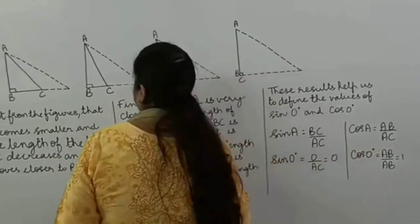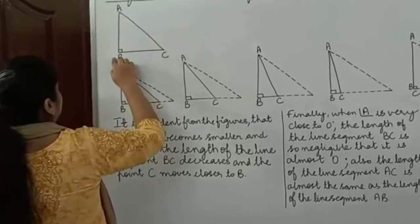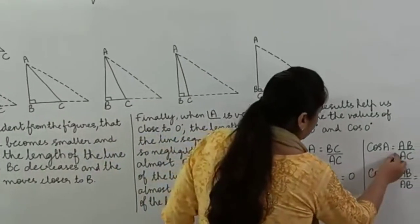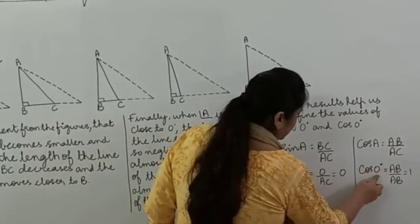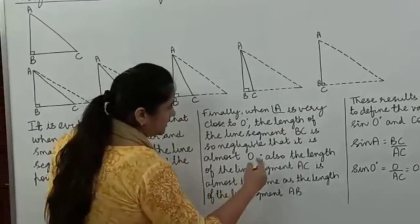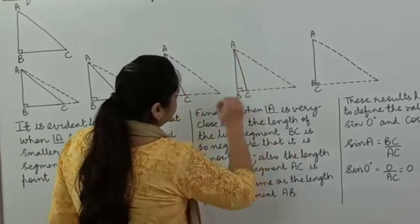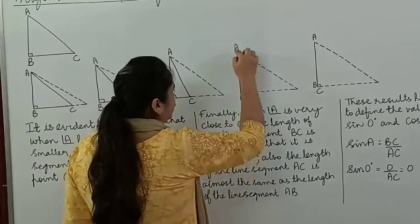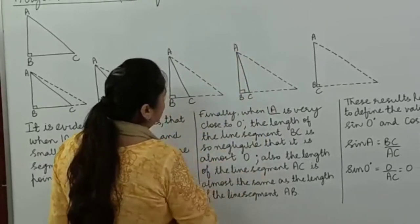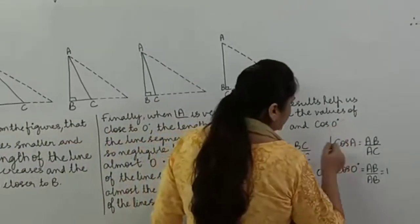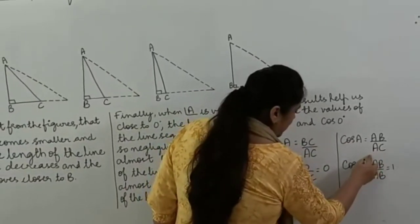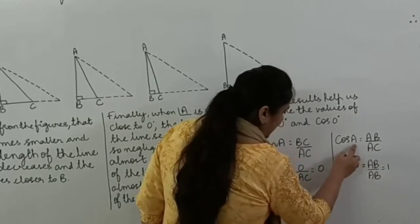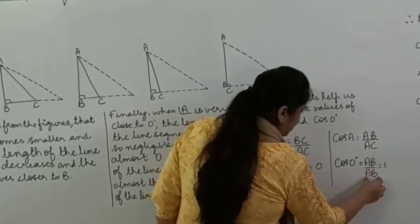Let's find cos A. Cosine is adjacent over hypotenuse, which means AB by AC. So cos A equals AB by AC. When A is 0 degrees, since C almost coincides with B, the length of AC is almost the same as AB — AB and AC are almost equal. Replacing AC with AB gives us AB by AB, which is 1. So cos 0 degrees is equal to 1.